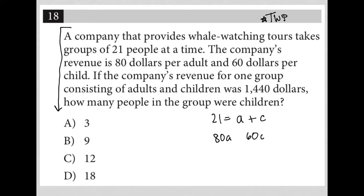If the company's revenue for one group consisting of adults and children was $1,440, I can add these together and say that equals $1,440. How many people in the group were children? So in essence, this question, once translated, gives us a system of equations.